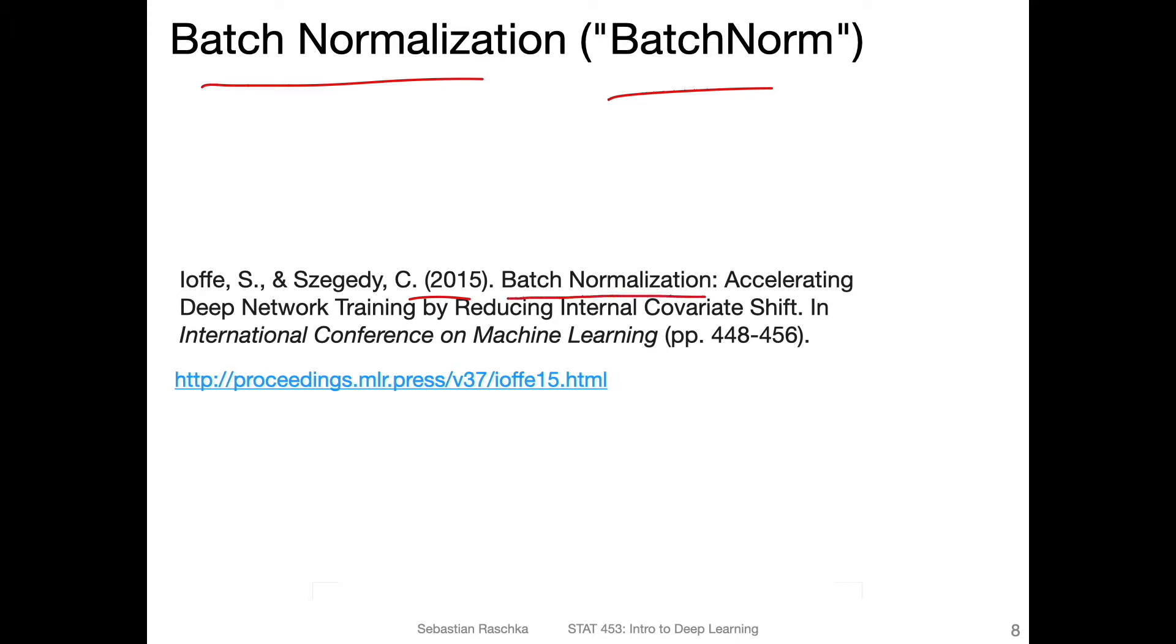So batch normalization, or in short batch norm, goes back to a paper published in 2015 called Batch Normalization: Accelerating Deep Network Training by Reducing Internal Covariate Shift. We will explain or think about this more when I go to the video where I offer some theories why batch normalization works well in practice.